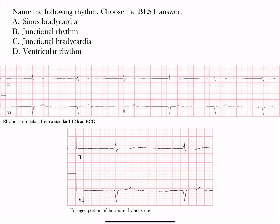Welcome back to another rhythm challenge. What you want to do is name the following rhythm, choosing the best answer. Our answer choices are: sinus bradycardia, junctional rhythm, junctional bradycardia, and ventricular rhythm. We have rhythm strips here from a standard 12-lead ECG — lead 2, an inferior limb lead, and lead V1, a right precordial lead. There's also an enlarged portion of those same rhythm strips to help you see the smaller boxes. Pause the video, take a few moments to choose an answer, then restart and we'll go through it together.